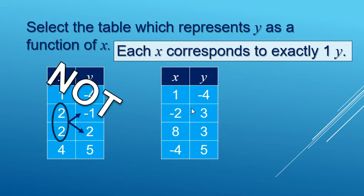Next one: one goes to negative four, negative two goes to three, eight goes to three, negative four goes to five. Each x goes to exactly one y, so this one is a function.